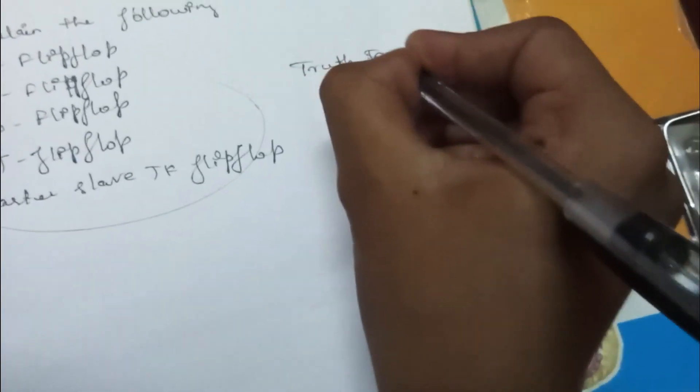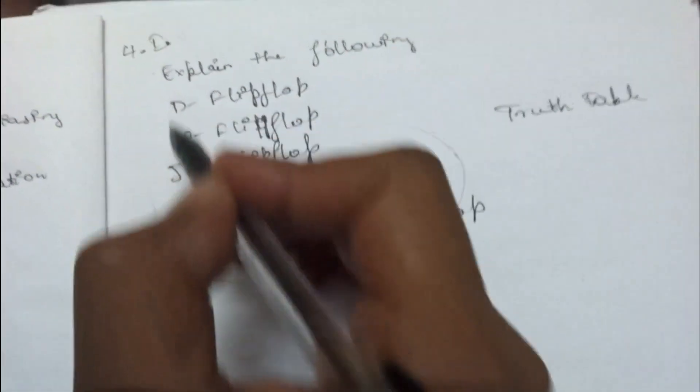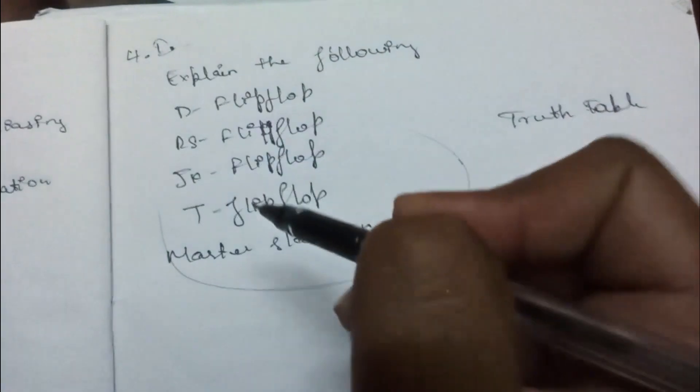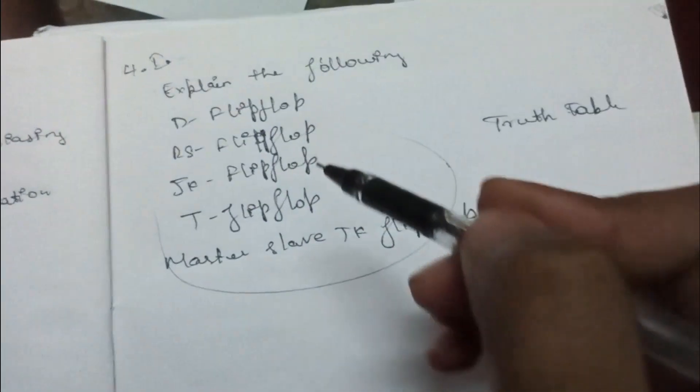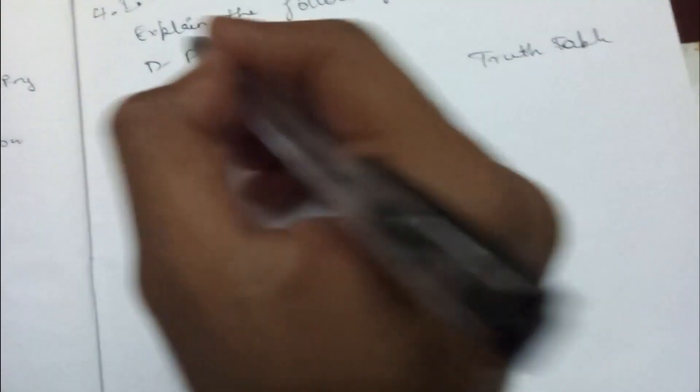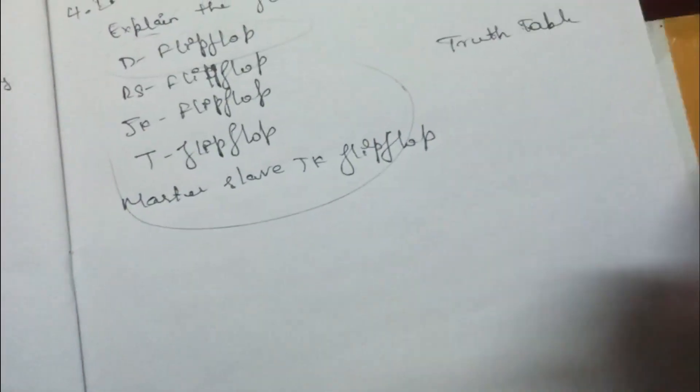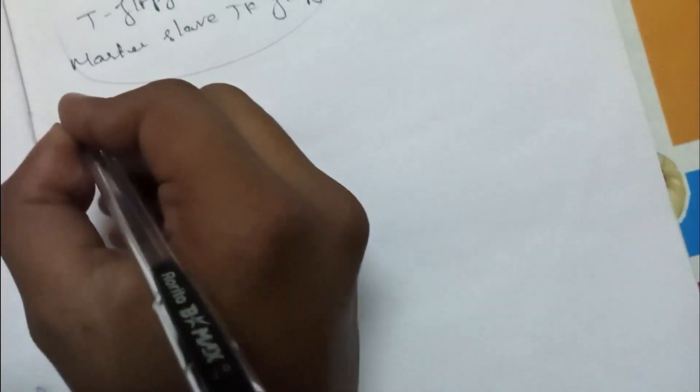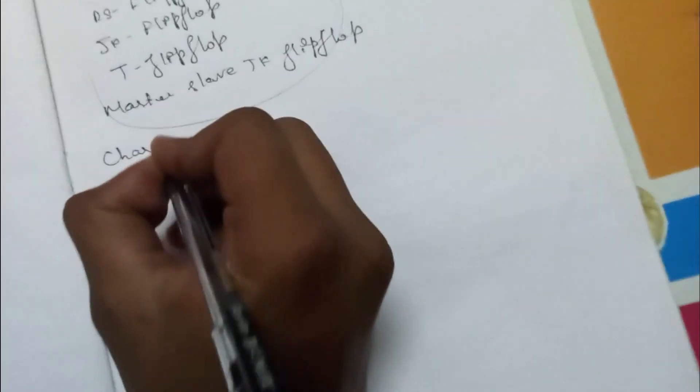To study all this easily, you have to know the truth tables. First write the truth table of D flip-flop, RS flip-flop, JK flip-flop, T flip-flop, and Master-Slave JK flip-flop. If you compare all the truth tables, you will understand the differences between them. Everything is similar and easy - just focus on the truth table and see the circuit diagrams of each flip-flop. You also have to study characteristics of all these flip-flops.